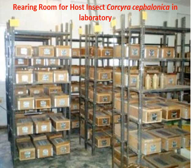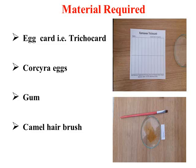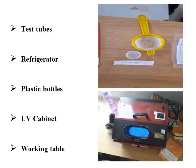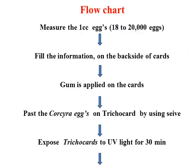This is the rearing room for Corcyra cephalonica. The Corcyra cephalonica rearing methodology will take more time and can be discussed in another lecture. After eggs are collected, various functions follow: mating, sieving of eggs, and storing fresh eggs separately. The materials required include egg cards, pre-printed Tricho-cards on card sheets, fresh Corcyra eggs, gum arabic applied with a camel hair brush, a sieve for even distribution of eggs on the card, a refrigerator for storage, plastic bottles and jars, and a UV cabinet for UV sterilization of the eggs stuck on the Tricho-card.